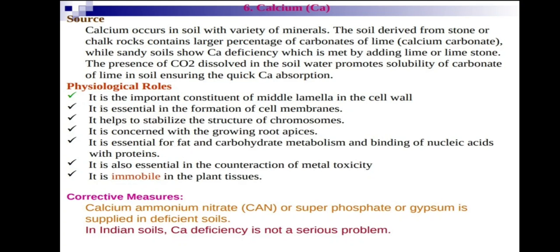Increasing CO2 concentration in the soil helps in calcium absorption by plants. Physiological roles of calcium include being an important constituent of the middle lamella in the cell wall, and being essential for formation of the cell membrane. It also helps stabilize the structure of chromosomes. Calcium is concerned with growing root apices — an important physiological function. It is essential for fat and carbohydrate metabolism and binding of nucleic acids with proteins.